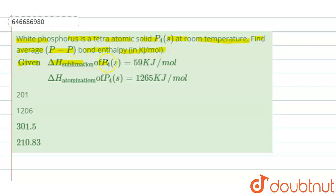It is given that delta H of sublimation of P4 solid is 59 kilojoules per mole, and delta H of atomization of the same P4 solid is 1265 kilojoules per mole.